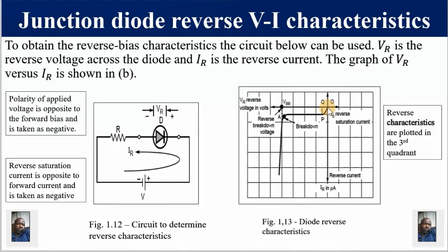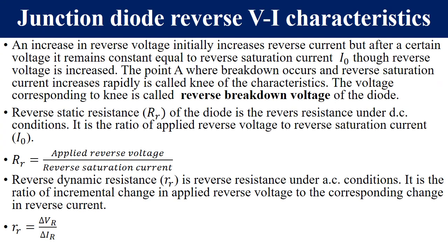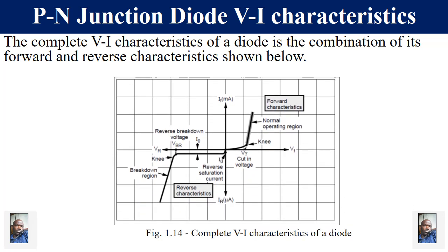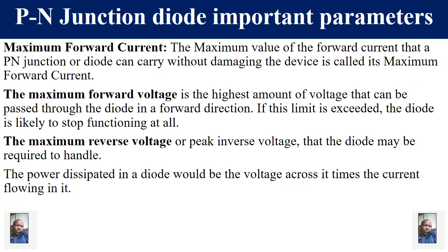Reverse resistance: there are two types — reverse static resistance RR under DC conditions and reverse dynamic resistance rr under AC conditions. Take note of the respective formulas. The forward and reverse characteristics can be plotted on the same graph. We have defined all the important terms.